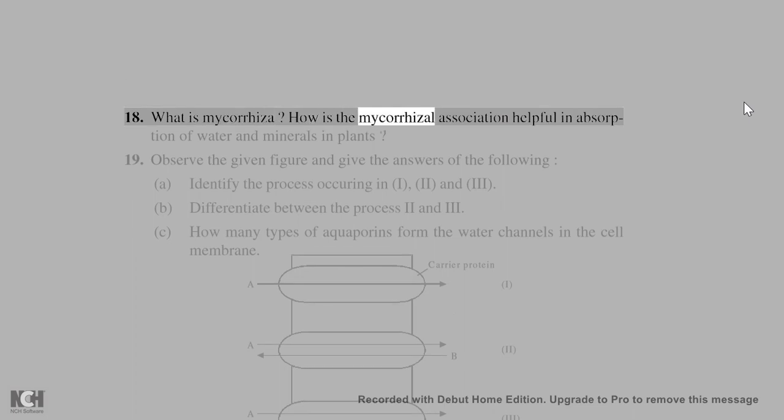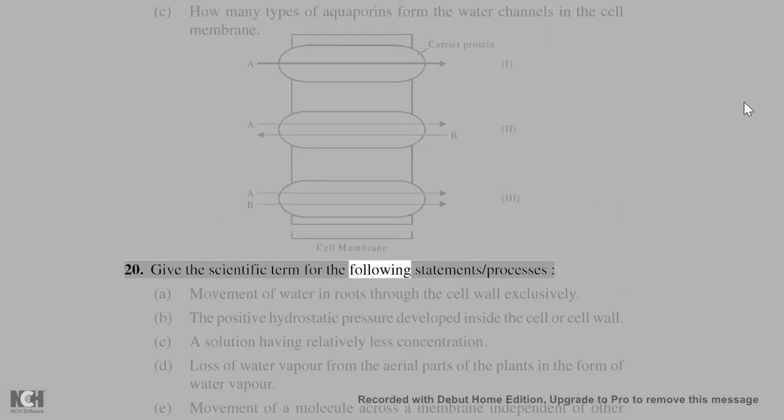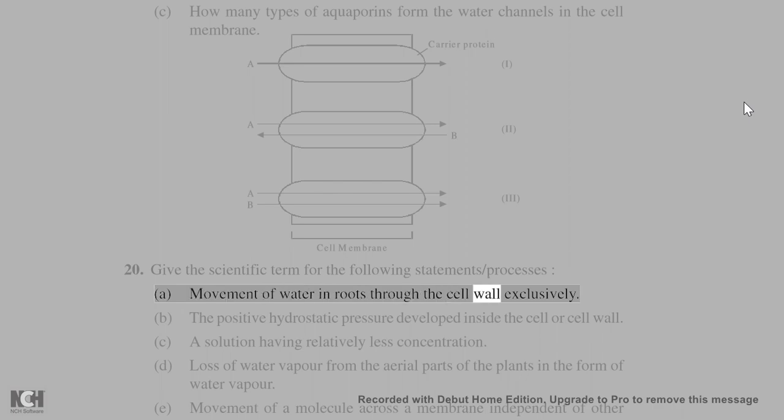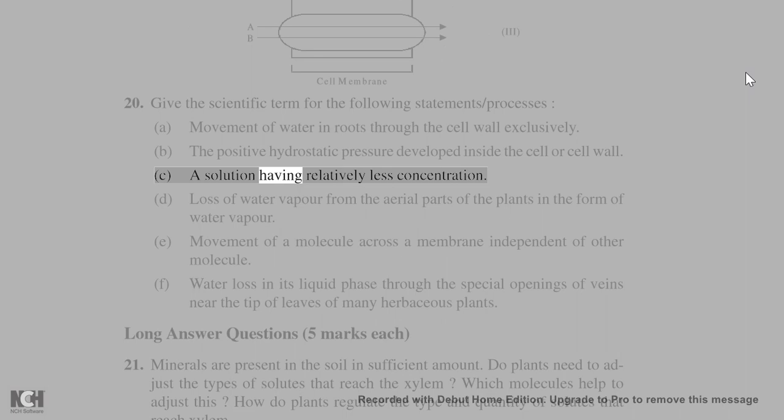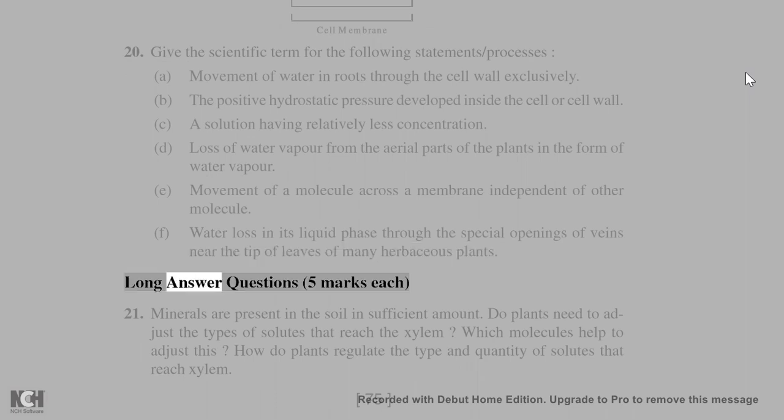18. What is mycorrhizae? How is the mycorrhizal association helpful in absorption of water and minerals in plants? 19. Observe the given figure and give the answers of the following. 20. Identify the process occurring in 1, 2, and 3. Differentiate between the process 2 and 3. How many types of aquaporins form the water channels in the cell membrane? 20. Give the scientific term for the following statements/processes. A. Movement of water in roots through the cell wall exclusively. B. The positive hydrostatic pressure developed inside the cell or cell wall. C. A solution having relatively less concentration. D. Loss of water vapor from the aerial parts of the plants in the form of water vapor. E. Movement of a molecule across a membrane independent of other molecule. F. Water loss in its liquid phase through the special openings of veins near the tip of leaves of many herbaceous plants.